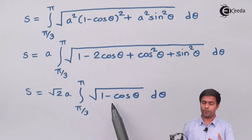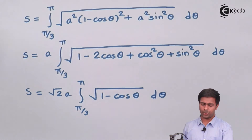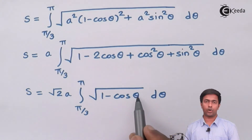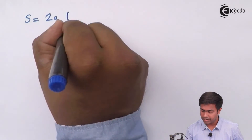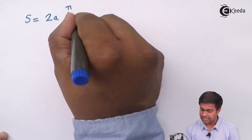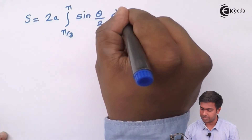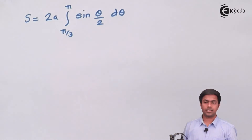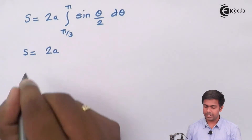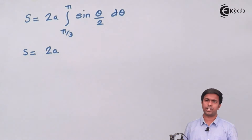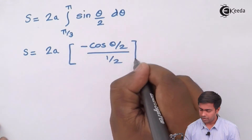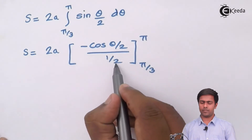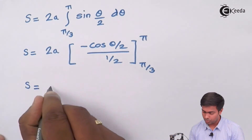We substitute the formula: 1 minus cos theta equals 2 sin squared(theta/2). Taking the square root gives root 2 times sin(theta/2). That root 2 comes outside, so S equals 2A integrated from pi/3 to pi of sin(theta/2) dθ. Evaluating the integral of sin(theta/2) gives negative cos(theta/2) divided by half. So S equals 2A, and this half brings the factor to 4A outside: S equals 4A times [negative cos(theta/2)] from pi/3 to pi.